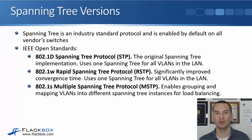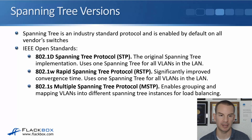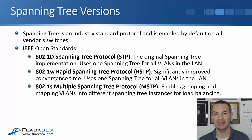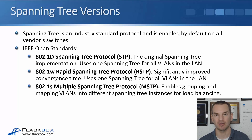Rapid Spanning Tree also uses one Spanning Tree instance for all VLANs in the LAN. The latest of the industry standards is 802.1s, which is Multiple Spanning Tree. That enables grouping and mapping VLANs into different Spanning Tree instances, which allows you to do load balancing.